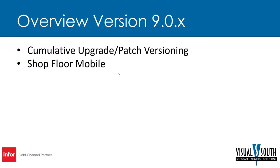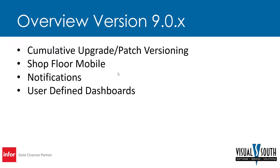Shop floor mobile was introduced in version nine — we'll show more of that in version ten where it's been expanded. Notifications are also included, along with user-defined dashboards. Version nine gives you the ability to create your own dashboards at an IT level. The lead time lifecycle feature lets you track an order from inception to delivery — you can set up workflows defining how much lead time happens at each phase, and the system will track actual time from quote through shipping and invoicing so you know your entire product lifecycle lead time.